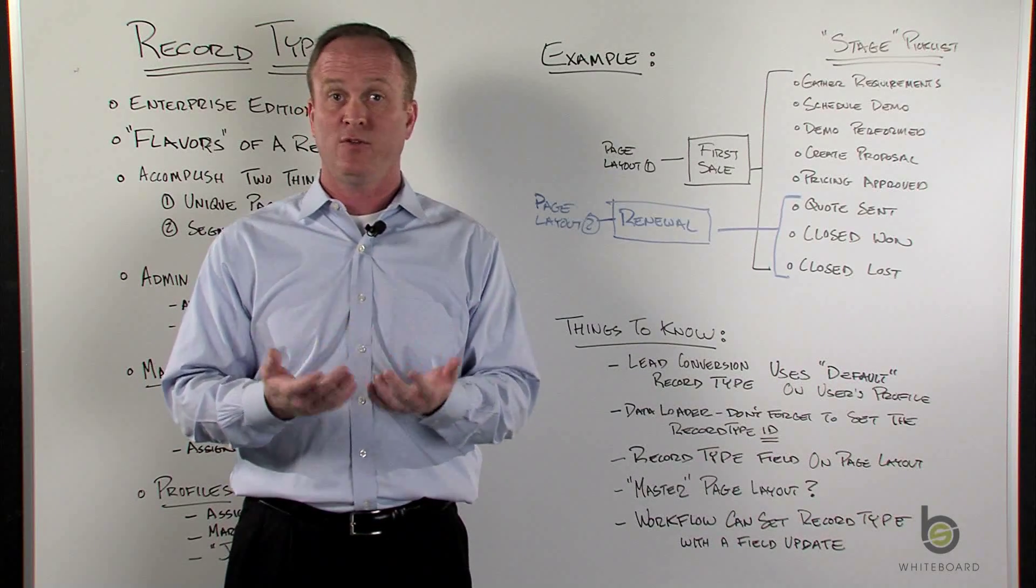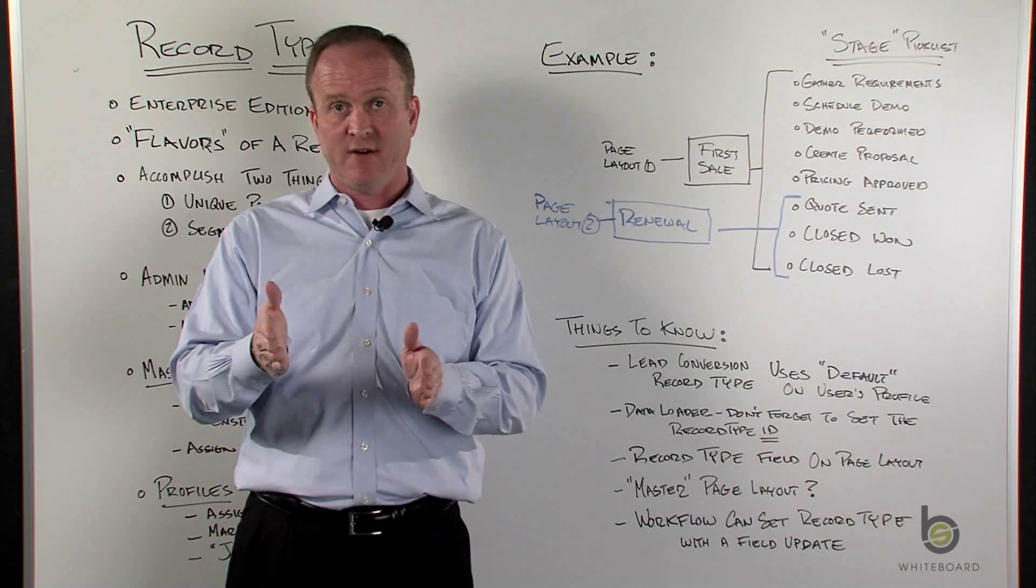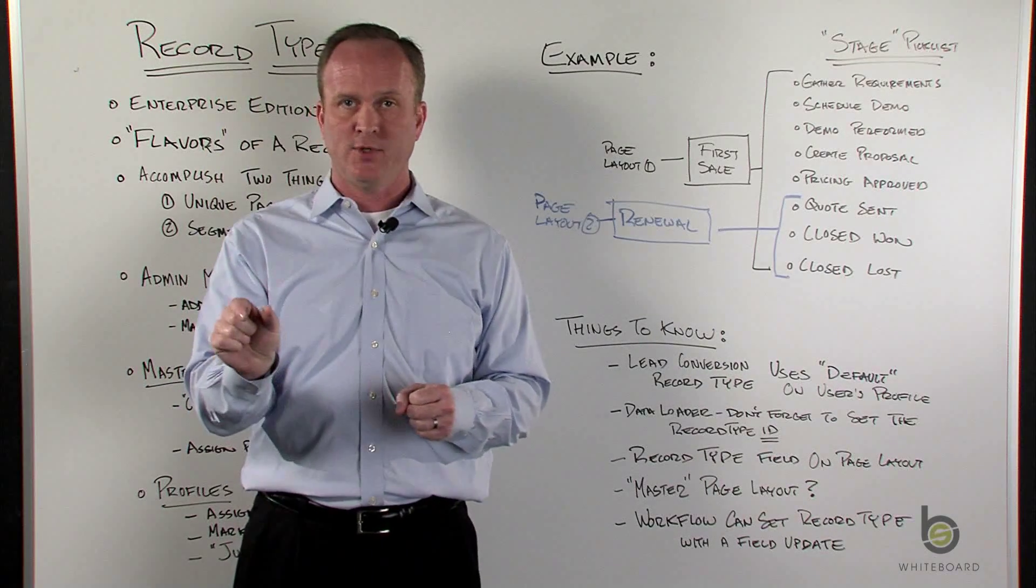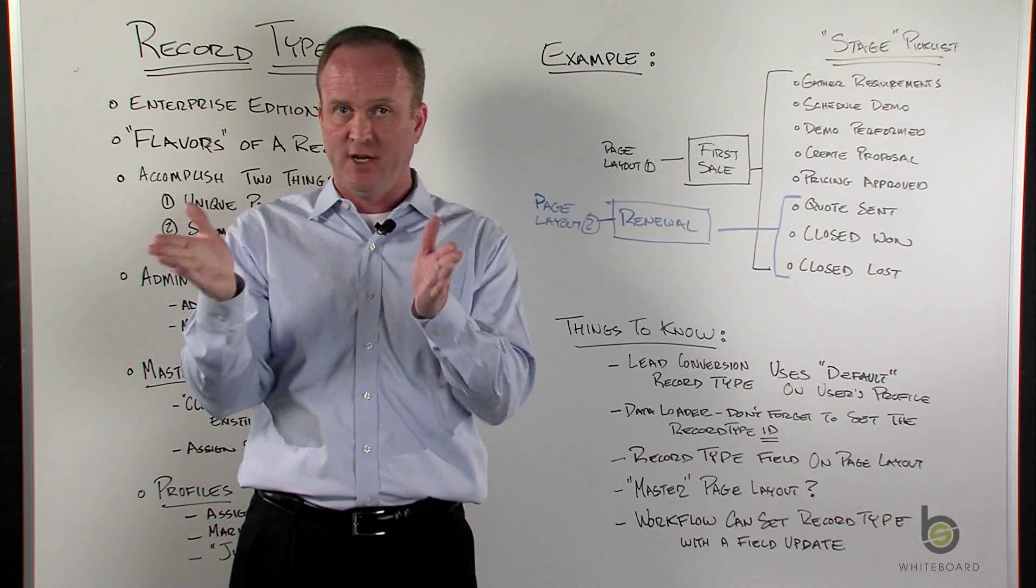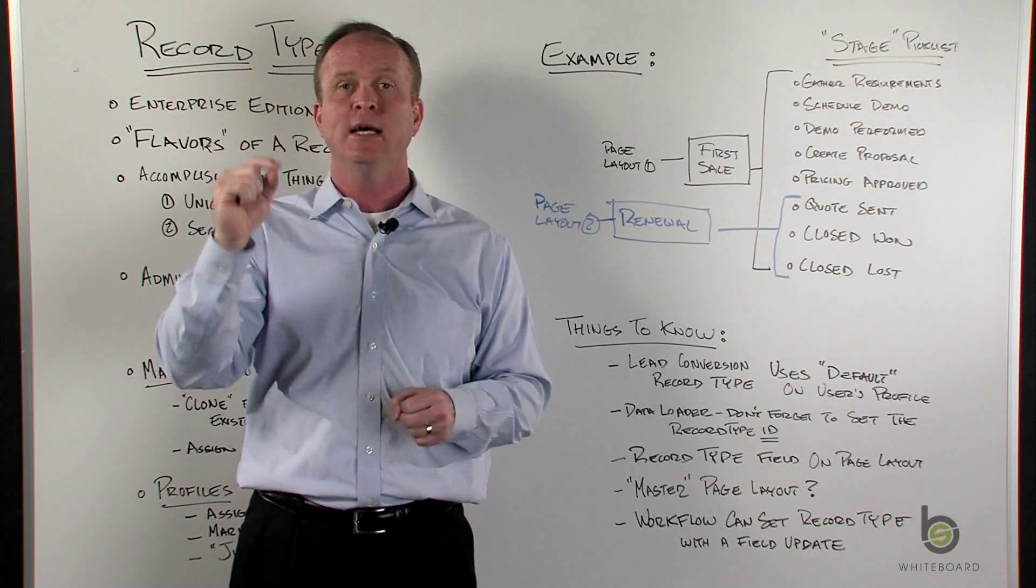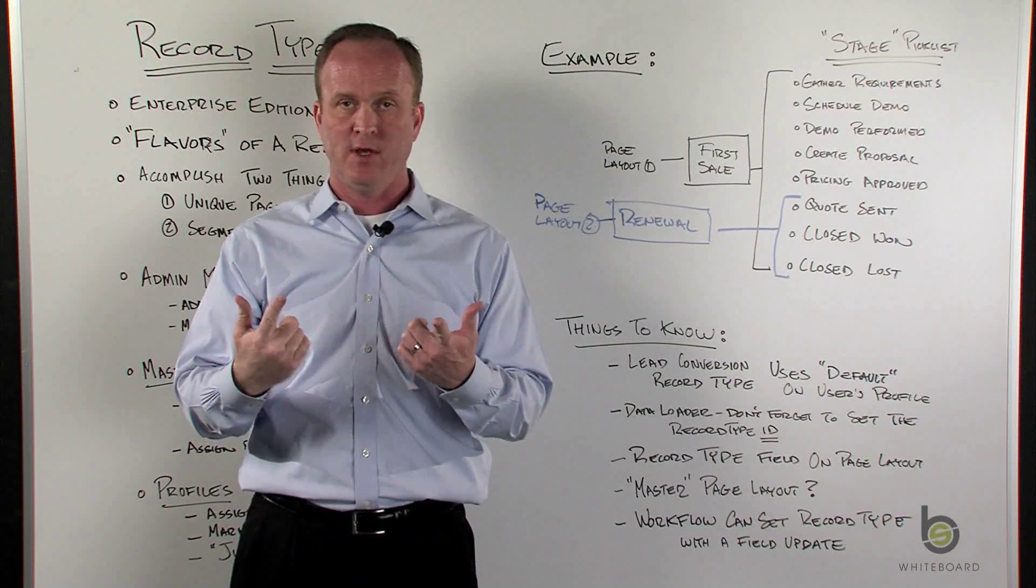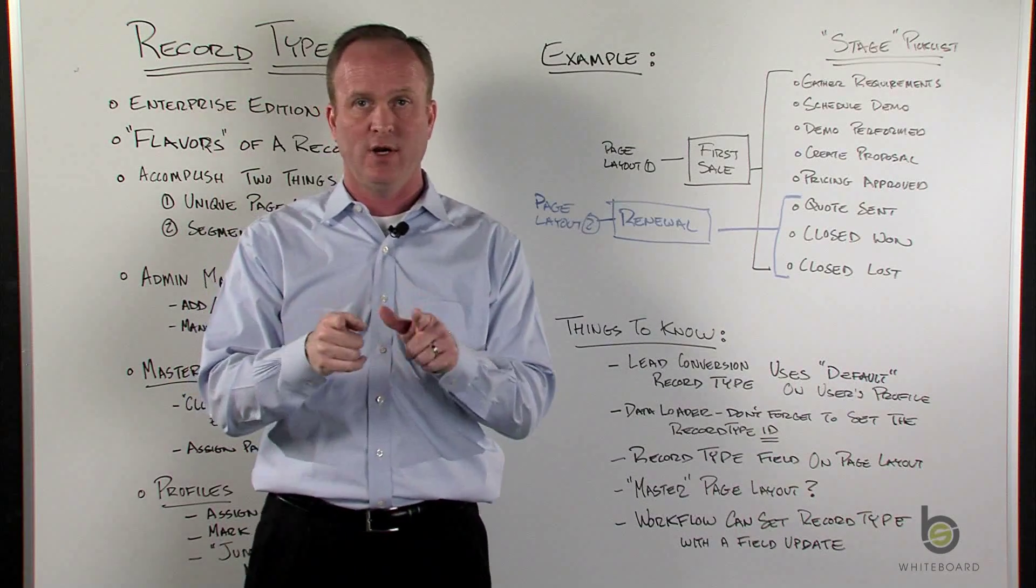Find that user's profile, and then find what the default record type is for that object for that user. So if you're the system admin, it's going to be your default record type. If you want to specify a record type, you have to add a column to your import spreadsheet and use the Salesforce record type ID, which is a 15 or 18 character ID, to set the ID for each record that's going up in the import. So just be careful, it might default to you on an import.